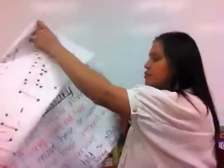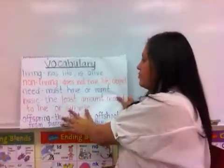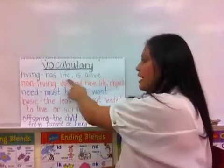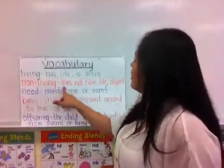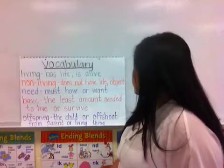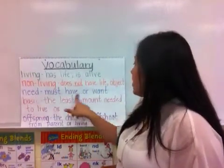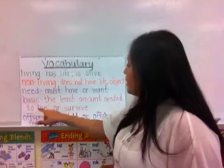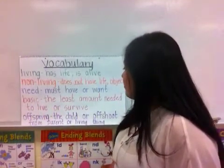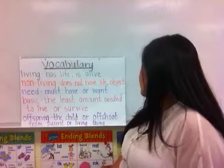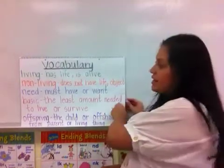The vocabulary for this week will be: living — has life, is alive; non-living — does not have life, which is usually an object; need — must have or want; basic — the least amount needed to live or survive; and offspring — the child or offshoot from a parent or a living thing.